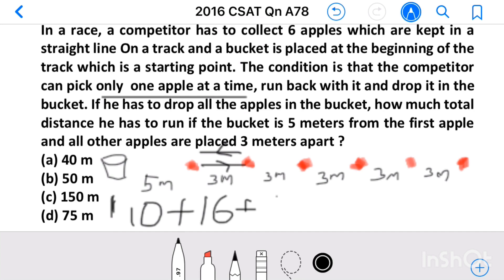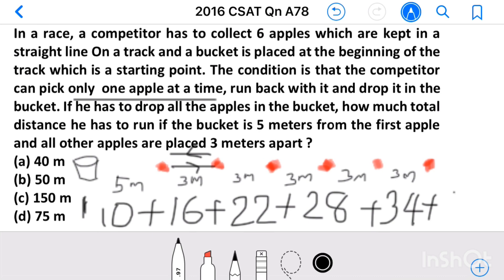Then to collect third apple, 16 plus 6, we get 22. For fourth apple, 22 plus 6, 28. Fifth apple, 28 plus 6, 34. For the sixth apple, he has to run 34 plus 6, 40.